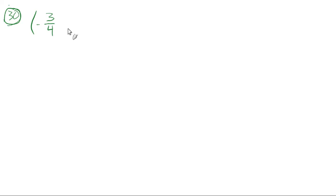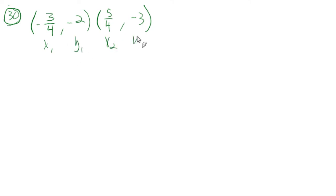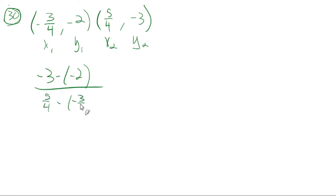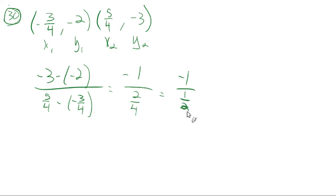Problem 30: the two points are (−3/4, −2) and (5/4, −3). Slope = (−3 − (−2))/(5/4 − (−3/4)) = −1/(8/4) = −1/(2) ... actually 5/4 minus negative 3/4 is 8/4 = 2, so slope = −1 ÷ (1/2)... Let's recalculate: numerator = −3 + 2 = −1; denominator = 5/4 + 3/4 = 8/4 = 2. Dividing, −1 ÷ (1/2) — wait, denominator is 2, so slope = −1/2... The instructor gets −1 divided by 1/2 by writing 2/4 = 1/2, then multiplying by reciprocal 2/1, giving slope = −2.